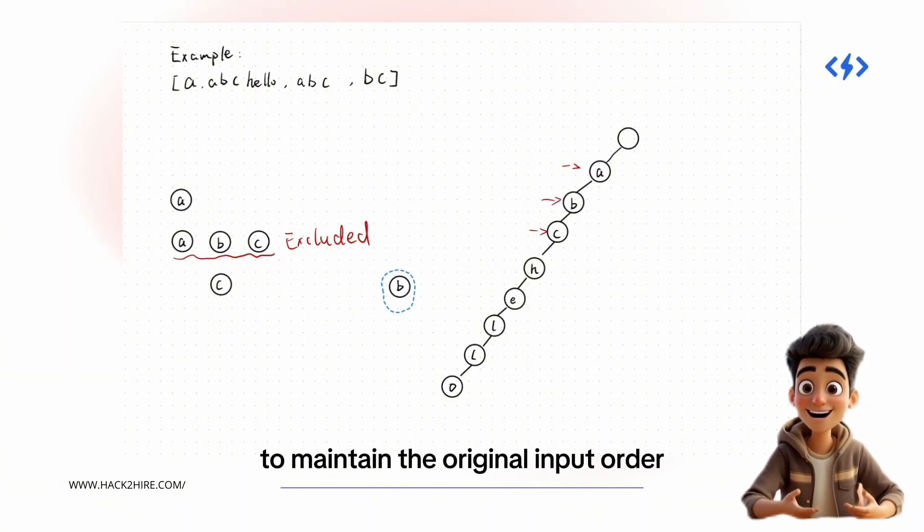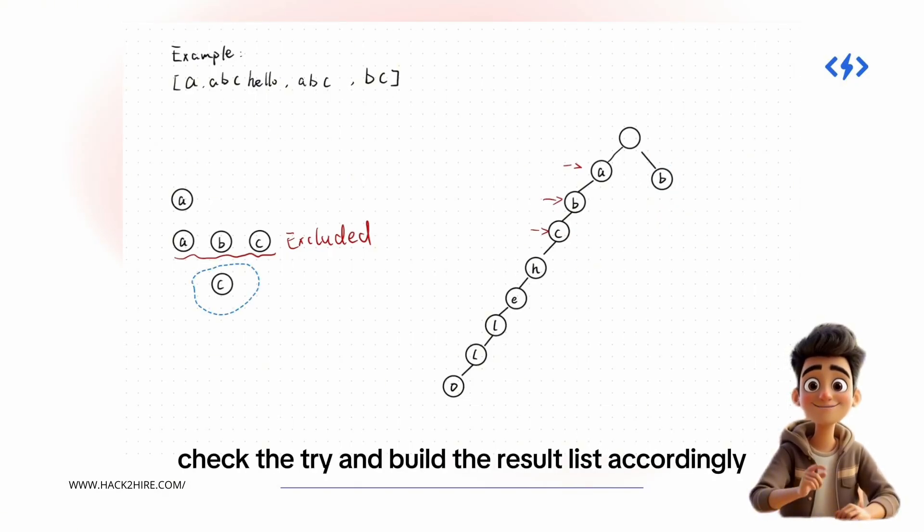To maintain the original input order, we process words in order, check the trie, and build the result list accordingly.